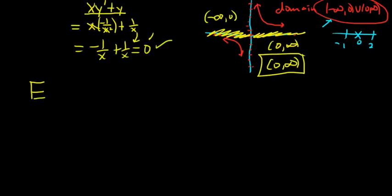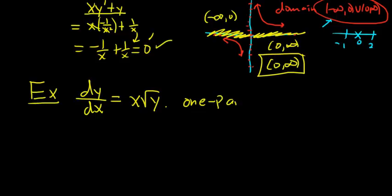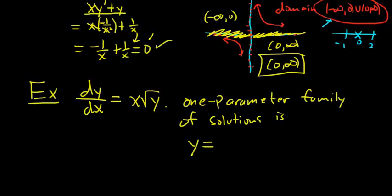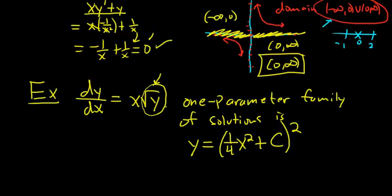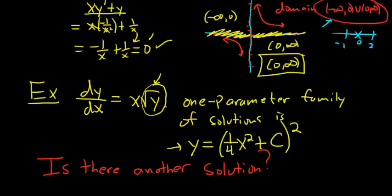Let's finish talking about solutions — there's one more key idea. Say we have the differential equation dy/dx equals x times the square root of y, and we know that a one-parameter family of solutions is y equals (¼x² + c)². This is a nonlinear DE because of the square root of y. The question is: is there another solution not given by this one-parameter family?